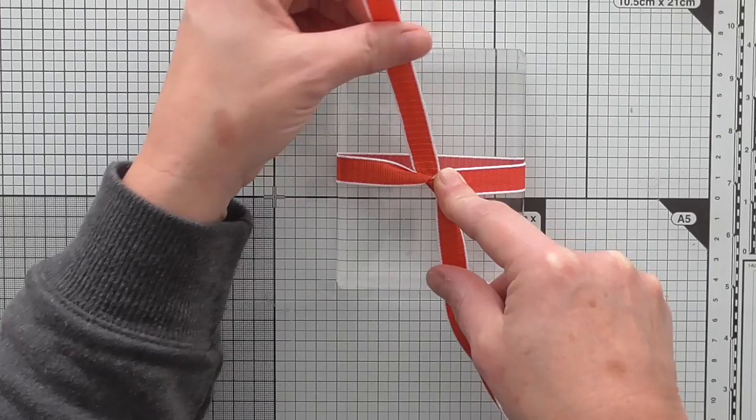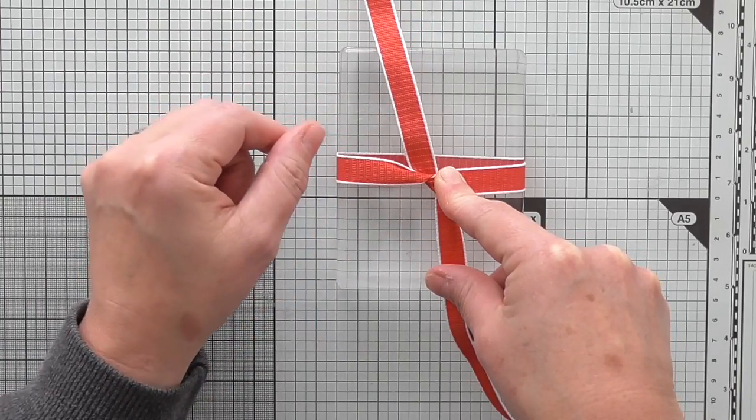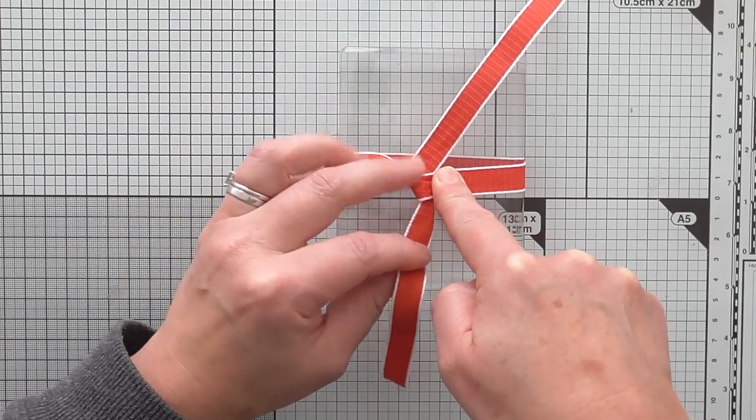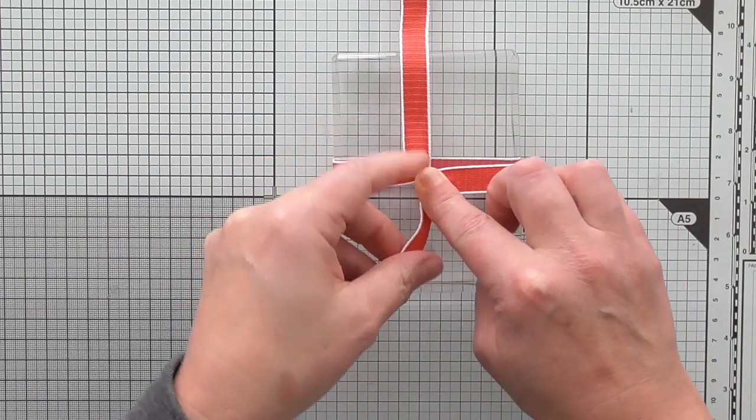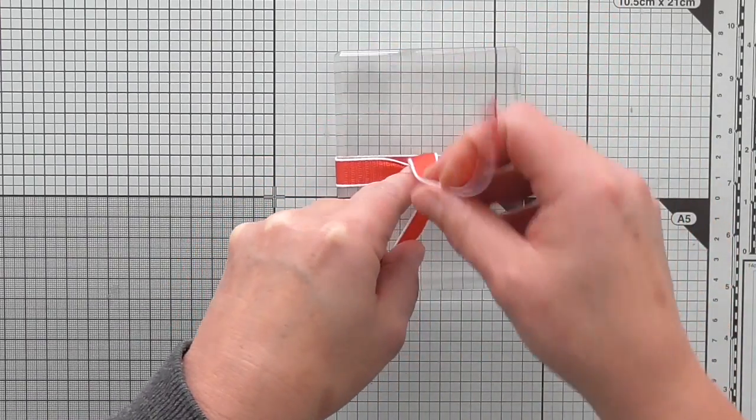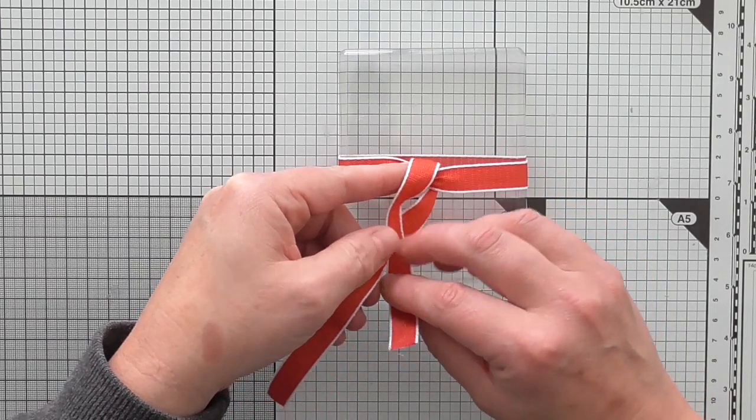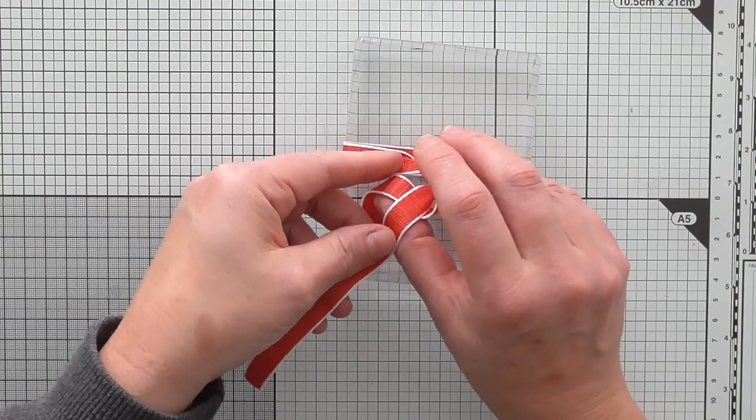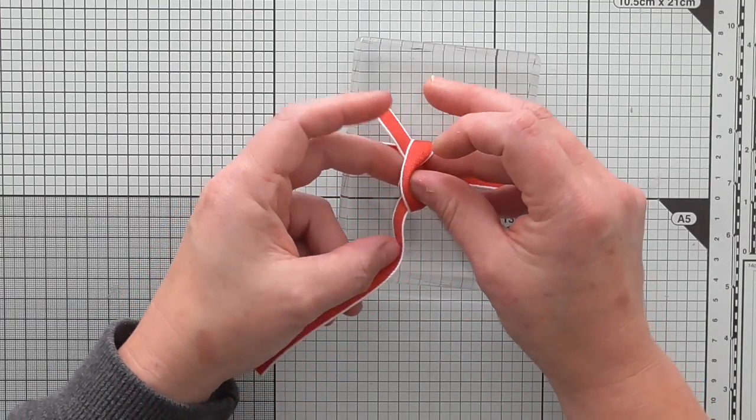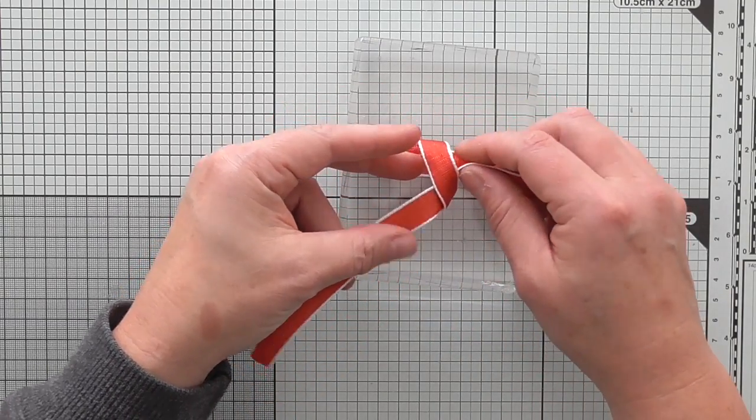And then this one is now our left and this one is now our right. I'm just going to change hands to make it easier. Hold it in the middle. And this top one now wants to come down across that one, tuck it under and back through the middle there.